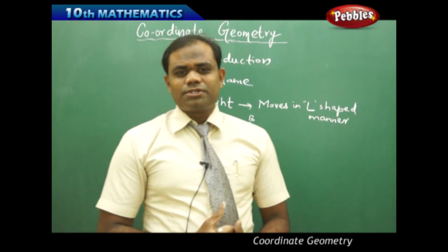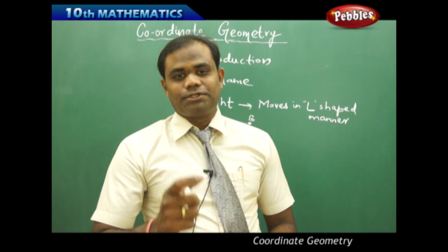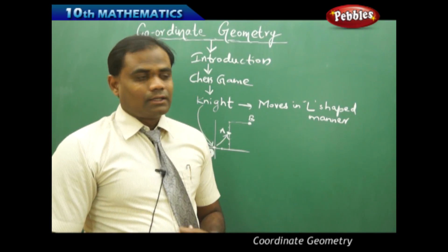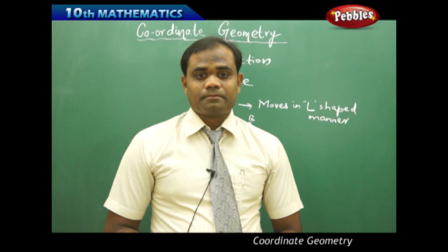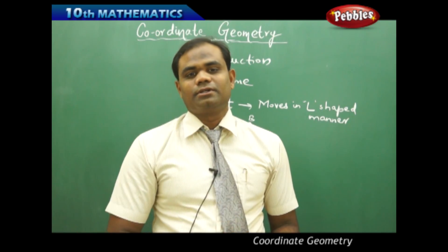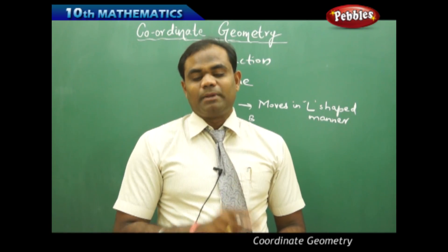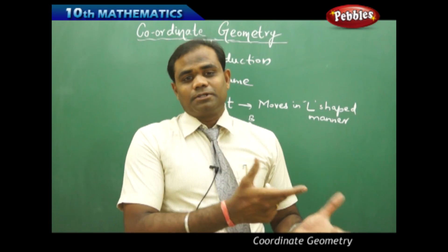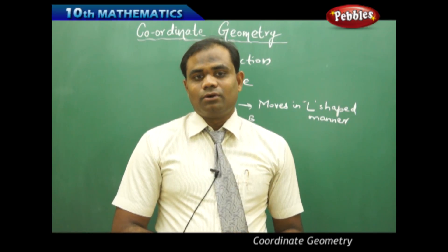I want to know the positions of A and B of the moving of the knight in an L-shape manner on the chess board. I can locate the position in the chess board provided I use coordinate geometry. Now coordinate geometry helps us in identifying the position of the point or position of an object on the particular place. So putting the object on the particular place or position can be done by using coordinate geometry.